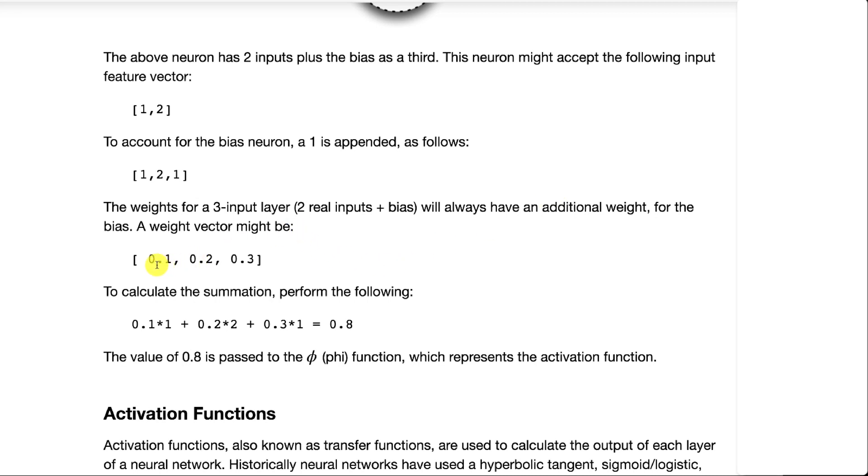We might have this as our weights, those three weight values. The third one would be called the bias value. We multiply each of these inputs by each of these weight values and sum it. This 0.8 becomes the summation that is then passed to the activation function.